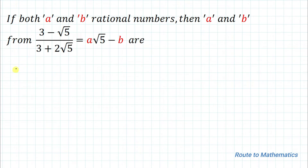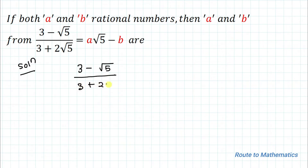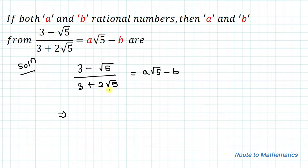So without any delay let's start the solution. The given equation is (3 minus root 5) divided by (3 plus 2 root 5) equals a root 5 minus b. Whenever a square root value comes in our denominator, the first thing that comes to mind is to rationalize it. Rationalization is required to make the denominator simpler by eliminating the square root.